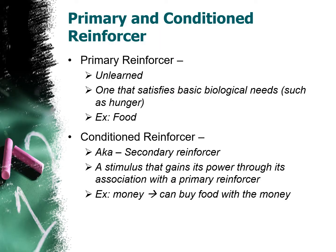So if you remember, primary and conditioned reinforcers are the difference. So a primary reinforcer is unlearned — it happens naturally. It's one that satisfies basic biological needs such as hunger. A primary reinforcer is something you have to have to survive, like food, water, things like that.